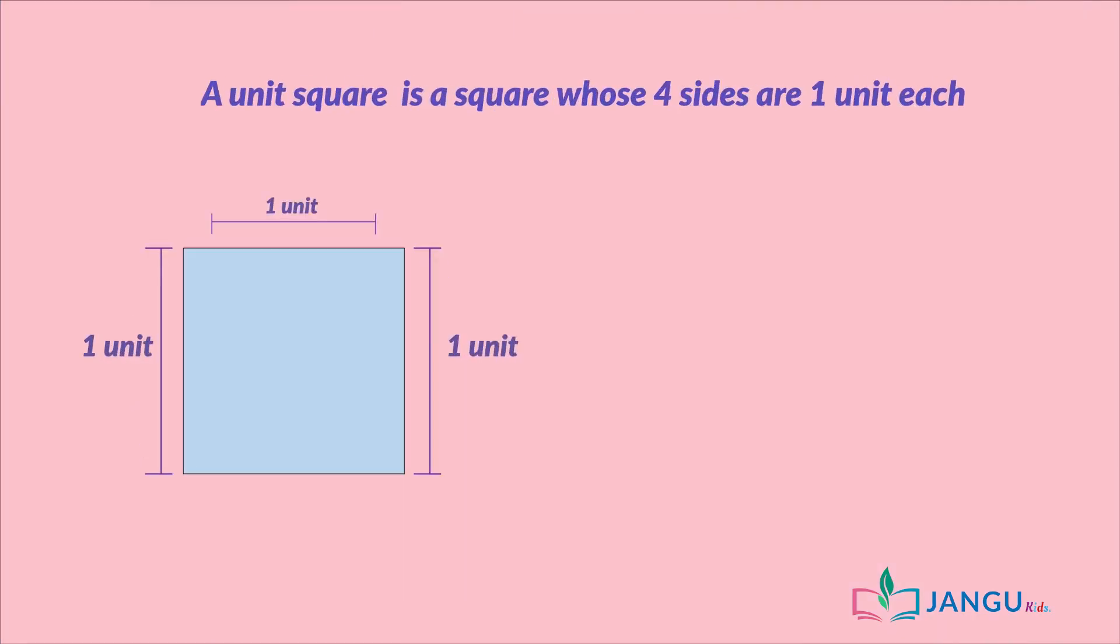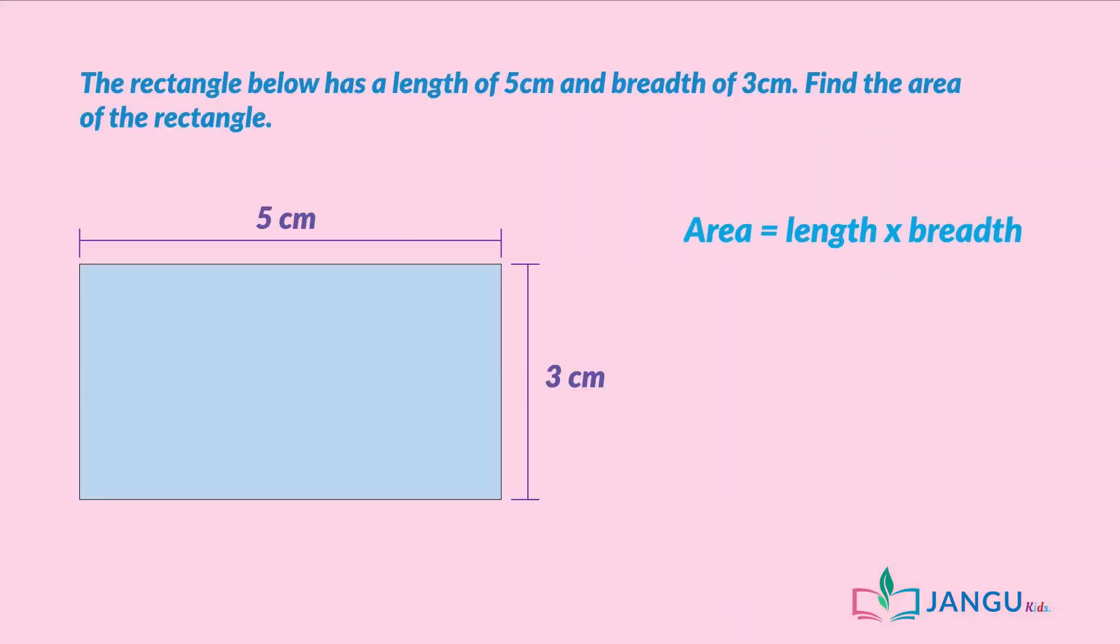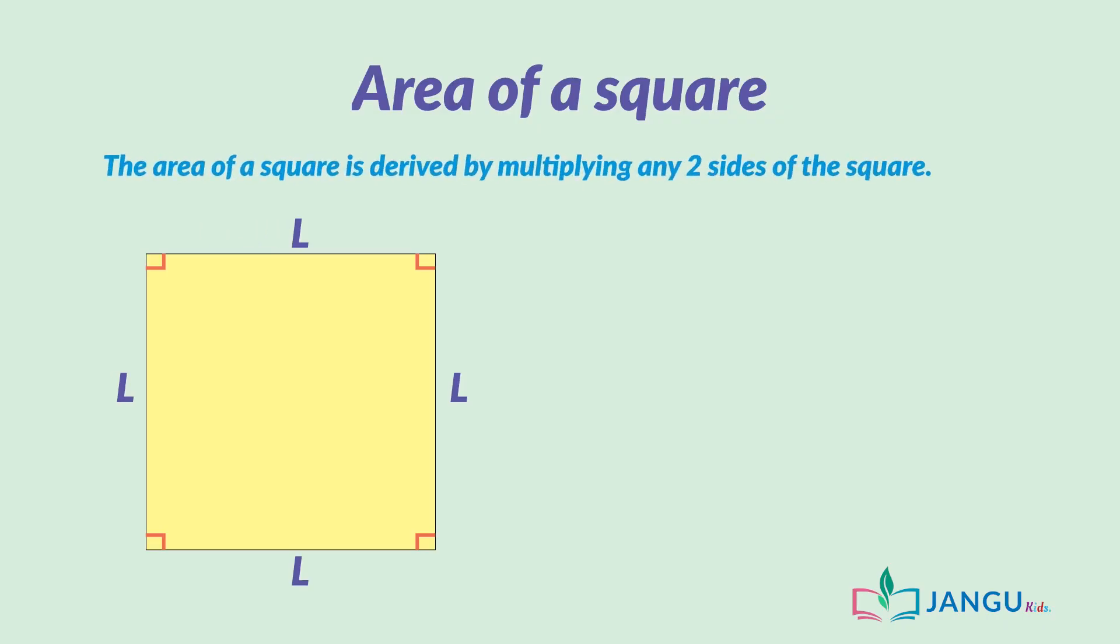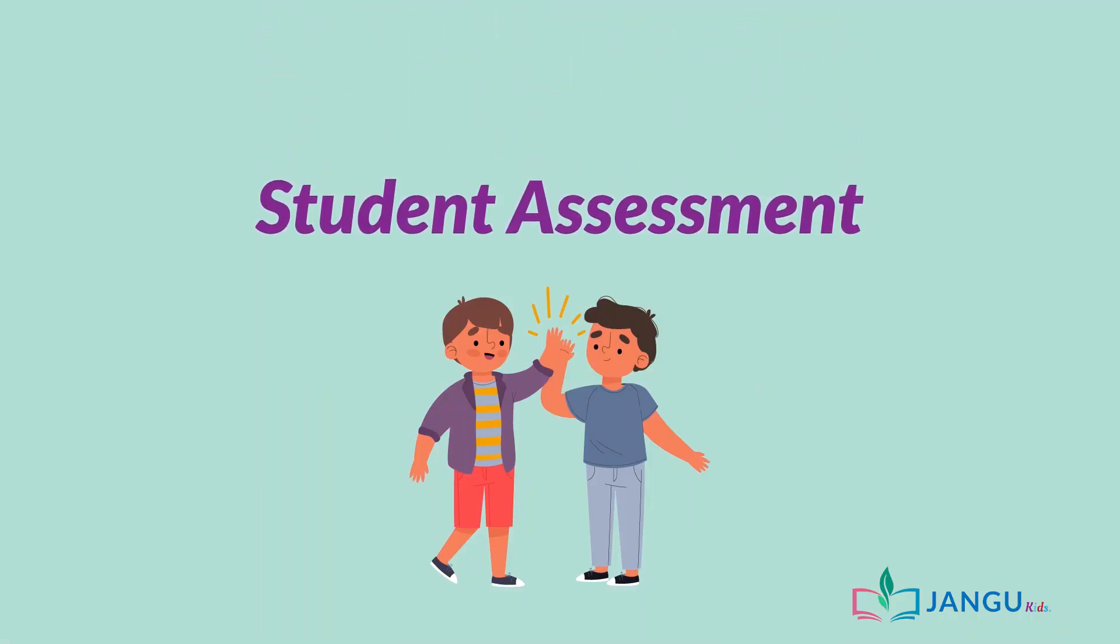A unit square is a square whose four sides are one unit each. And the formula for finding the area of a rectangle is length times breadth. The area of a square is derived by multiplying any two sides of the square. And now, it's assessment time!